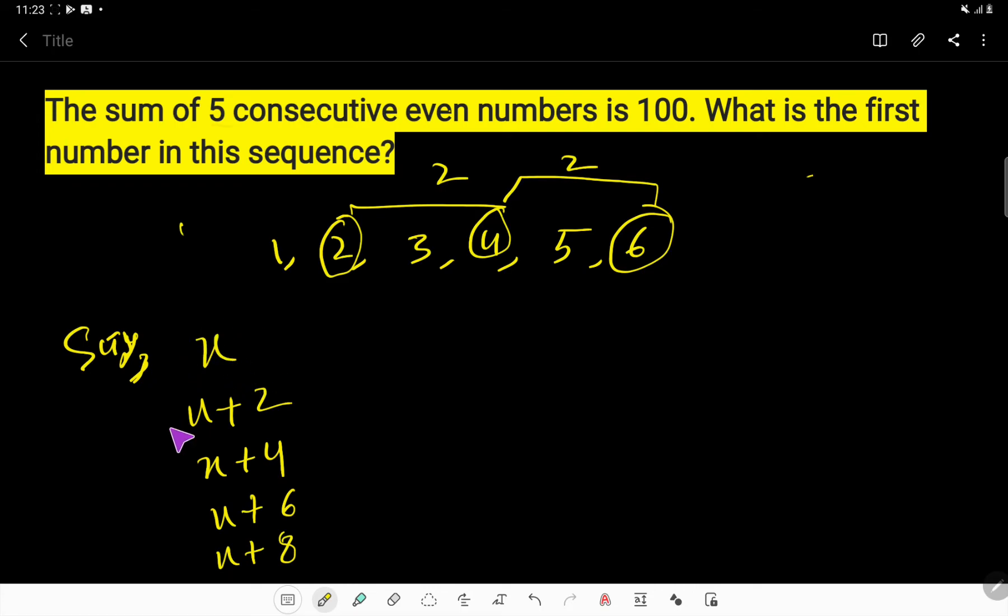Then look, the sum of these consecutive even numbers will be 100. So according to the condition, x plus x plus 2 plus x plus 4 plus x plus 6 plus x plus 8 equal to 100. Right? So look! So, here x plus x plus x, 2x then 3x, then 4x, then 5x. So here 5x plus...